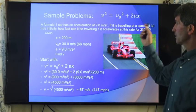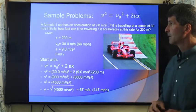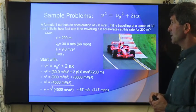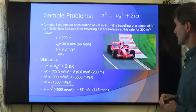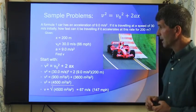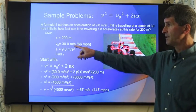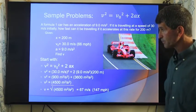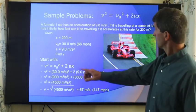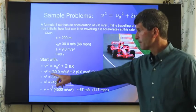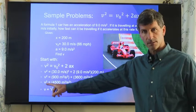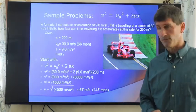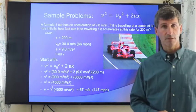The fourth equation, v² equals v₀² plus 2ax. Here, we have the Formula One car. It has an acceleration of 9 meters per second squared. It's traveling at a speed of 30 meters per second initially. How fast can it be traveling if it has a distance of 200 meters to accelerate? Here's our distance. Here's our velocity initially. We're assuming constant acceleration, 9 meters per second squared. We plug it into this equation right here. Here, we're solving for final velocity. We have v² on the left-hand side, so we've got to take the square root of both sides. After the acceleration, it's going about 67 meters per second, where it can accelerate to about 150 miles per hour from the initial 66 miles per hour.